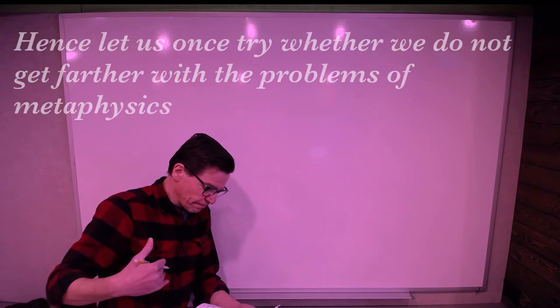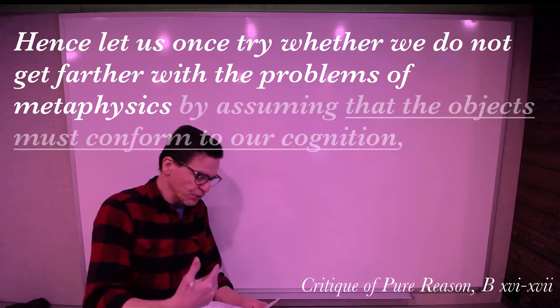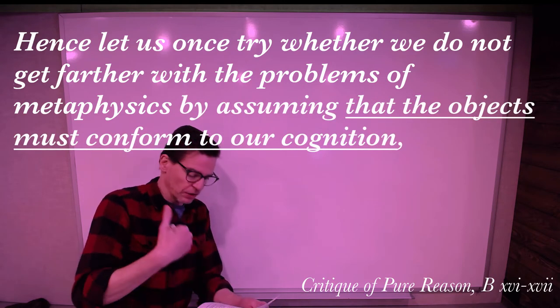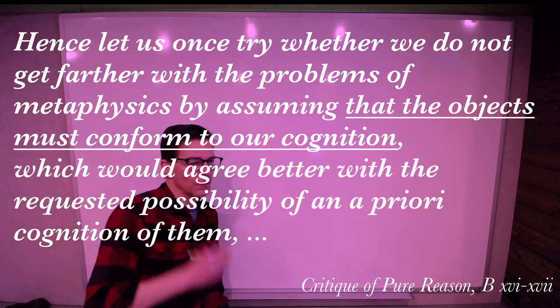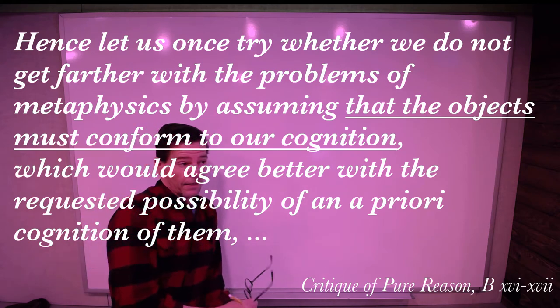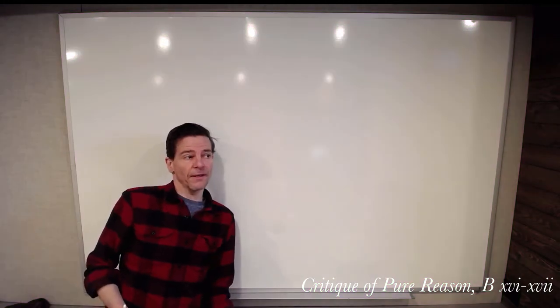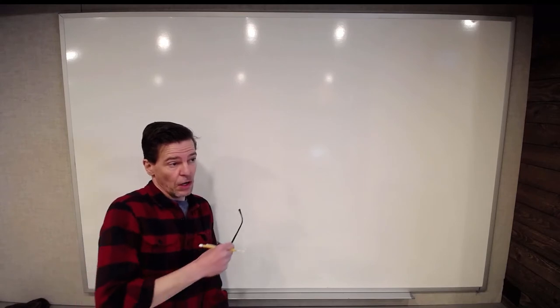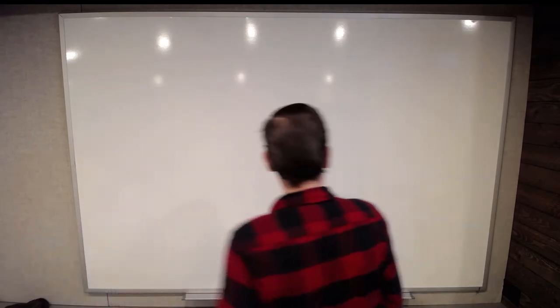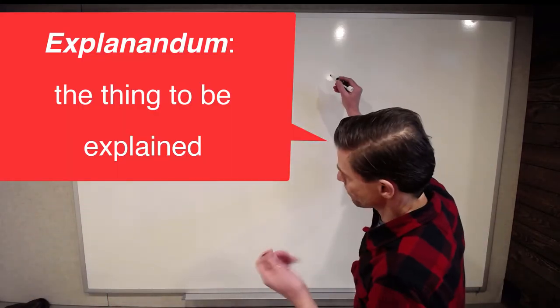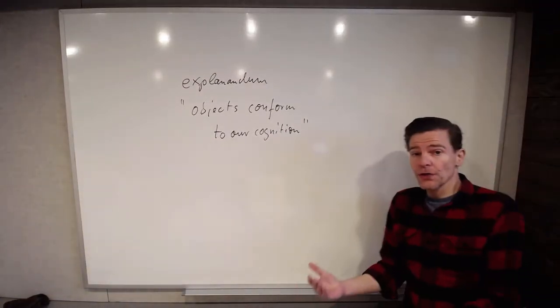Hence let us once try whether we do not get farther with the problems of metaphysics by assuming that the objects must conform to our cognition, which would agree better with the requested possibility of an a priori cognition of them. So he's saying if you want to explain a priori cognition, you're gonna have to let the objects conform to our cognition. That's the explanandum, the thing to be explained. The objects are supposed to conform to our cognition. What on earth does that mean?